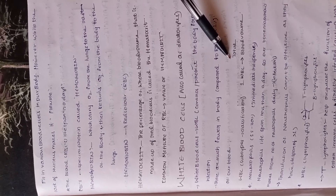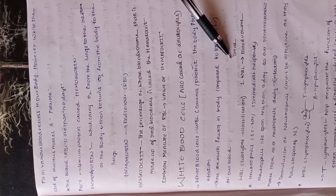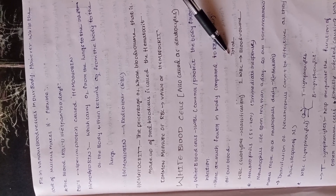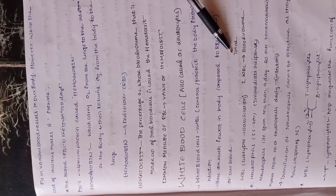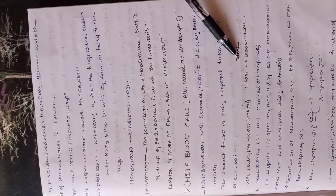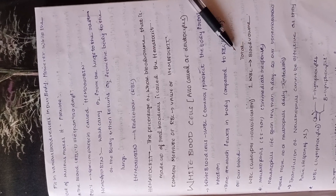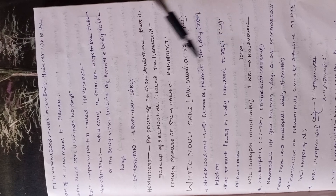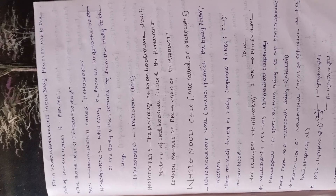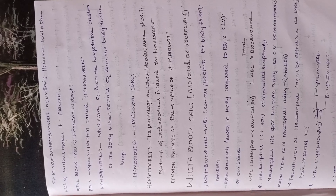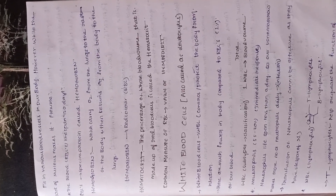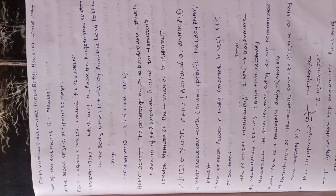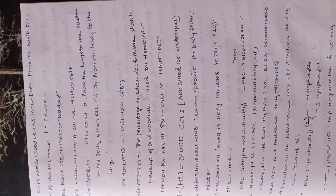WBC subtypes include neutrophils. Neutrophils make up 55 to 70% of WBCs and provide an immediate response to infection. The bone marrow produces more neutrophils as needed. The lifespan of WBCs is about 1 day, compared to RBCs which live 120 days.